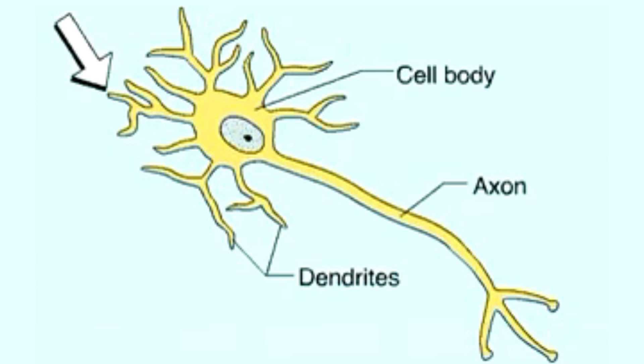What happens when the cell is stimulated? A stimulus changes the permeability of the cell membrane to sodium and potassium ions. This alters the distribution of charge in the cell body and if the change is great enough, it triggers a signal, called an action potential, that moves down the axon.